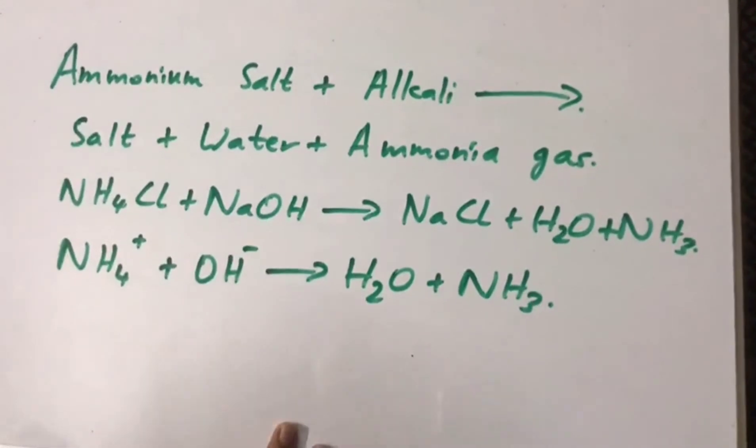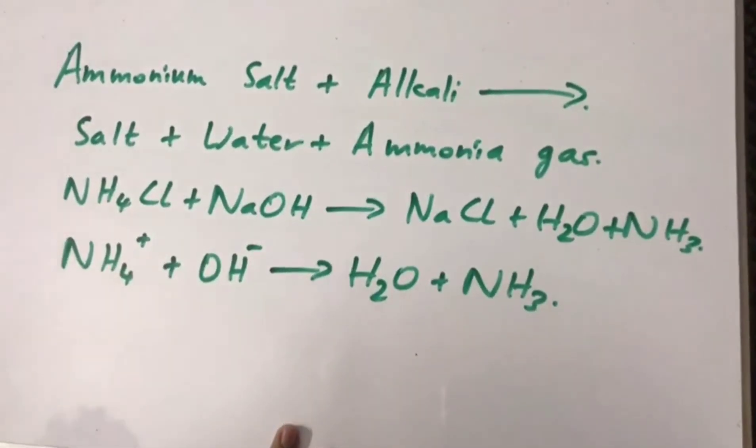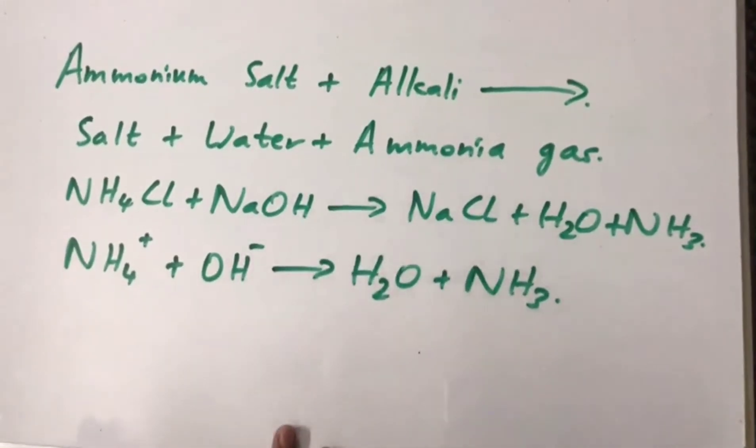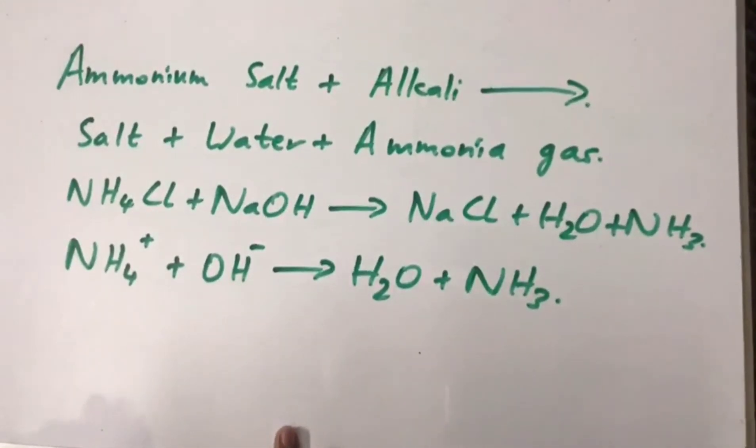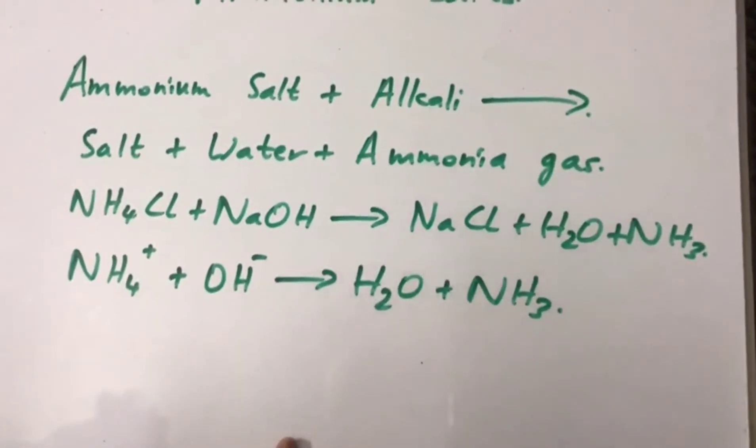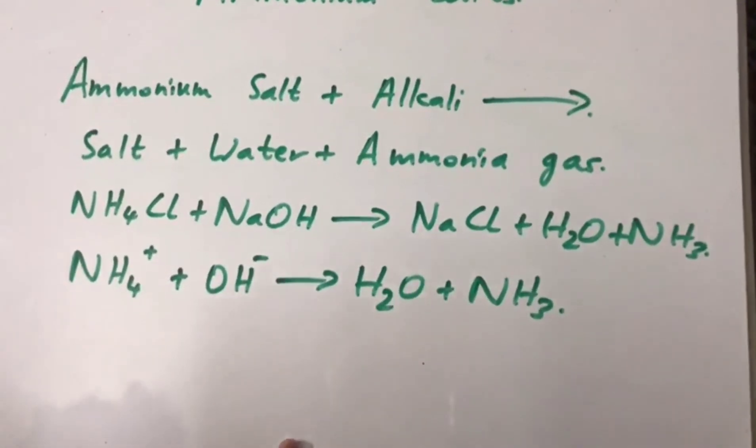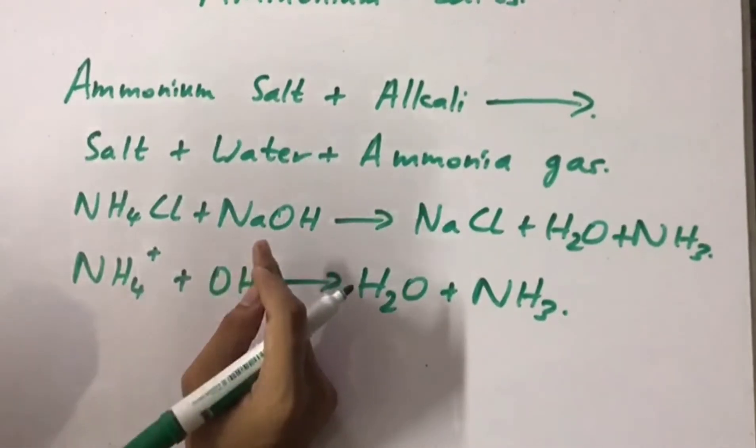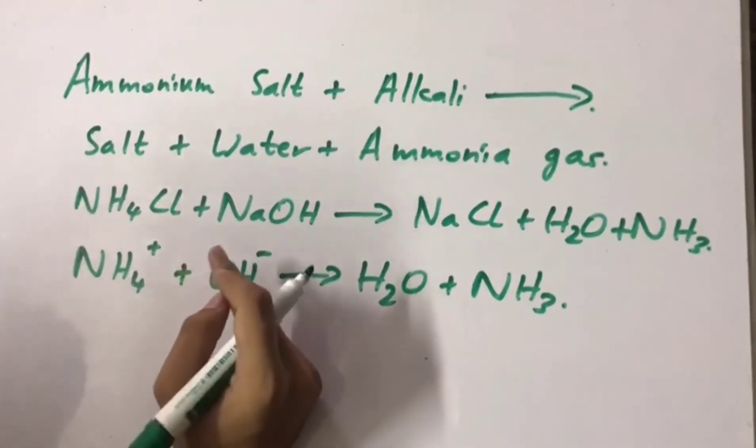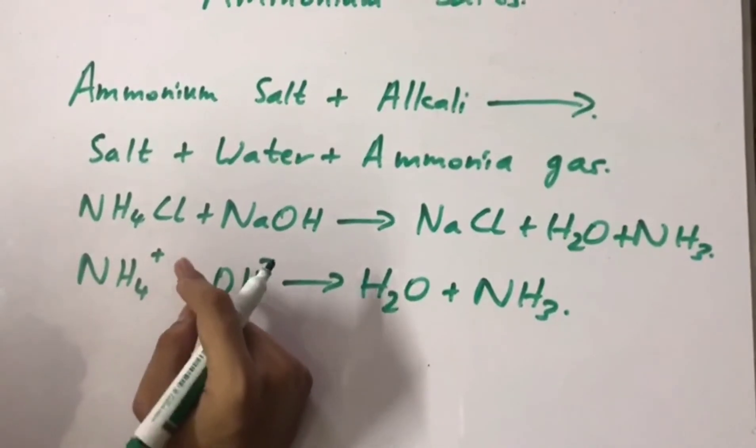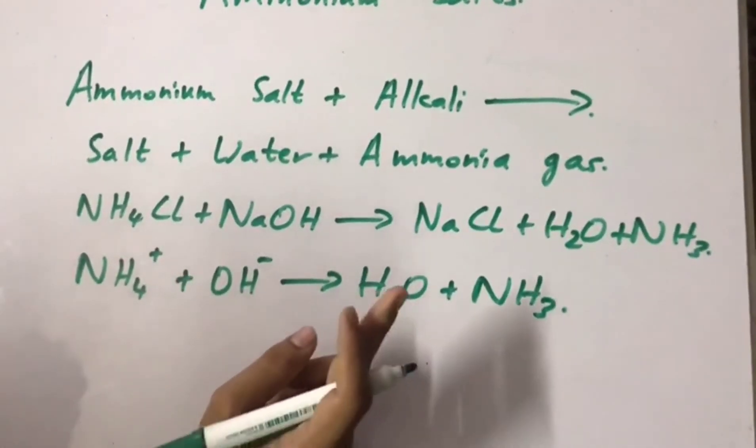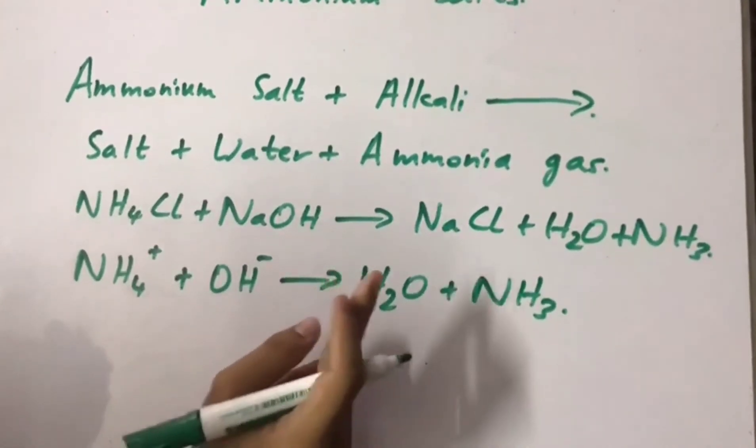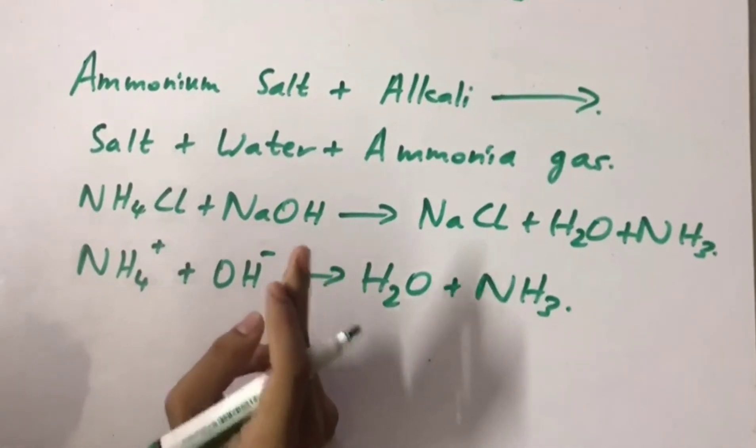A question that could be asked is why shouldn't an alkali like calcium hydroxide be added to a soil that has an ammonium salt added as a fertilizer already. That is because if an alkali is added, like calcium hydroxide, it would react with the ammonium salt producing ammonia gas, which would represent a loss of nitrogen. As nitrogen is important for plants, that would be disadvantageous.